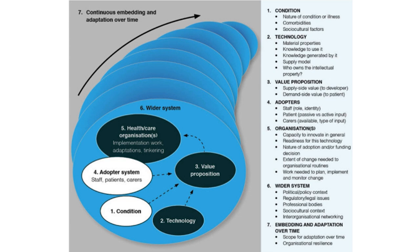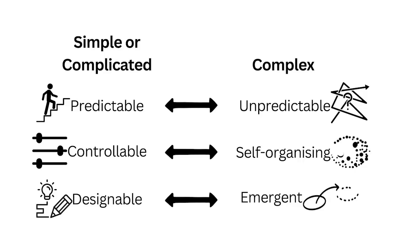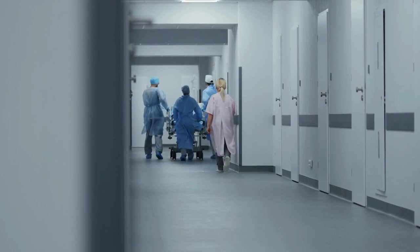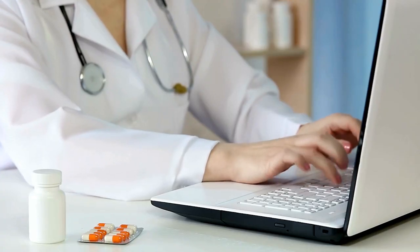One big reason why people underestimate this complexity is that they think of problems as just complicated and not truly complex — they don't really know the difference. A complicated problem involves many interconnected parts, but it's ultimately predictable and solvable with enough expertise and analysis. It tends to be linear and step-by-step. You need expertise and technical knowledge. But over time, you keep trying and eventually you build up an approach that works. An example might be introducing a new electronic health record system across the hospital.